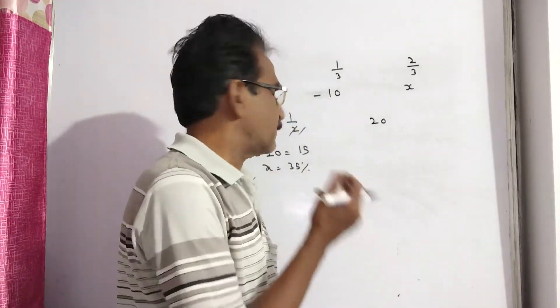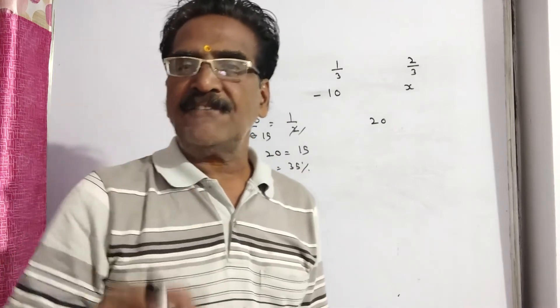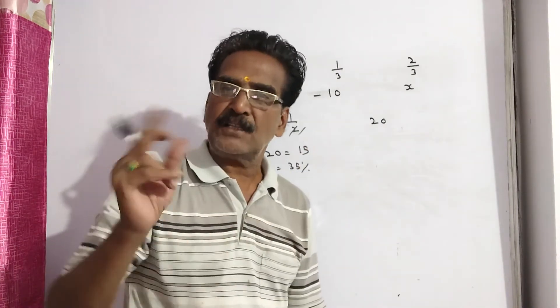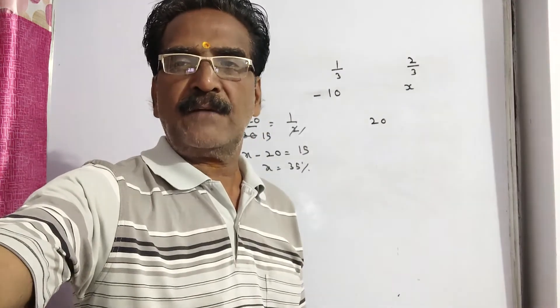Friends, so the remaining two-third of the goods must be sold at 35 percent profit so that he will get a 20 percent profit on the whole. Okay friends, thank you, have a nice day.